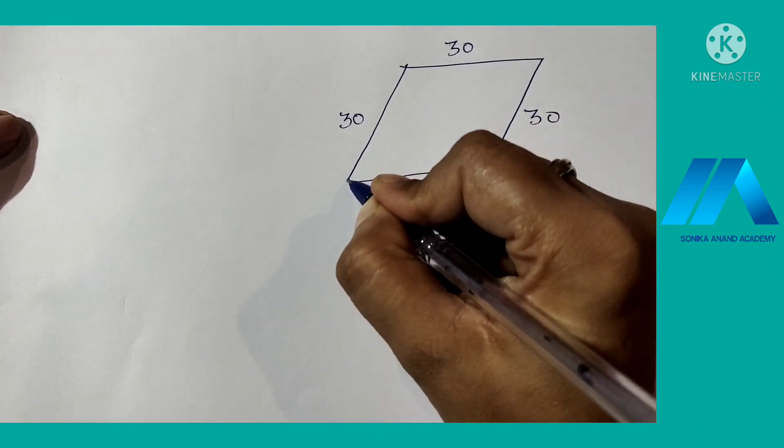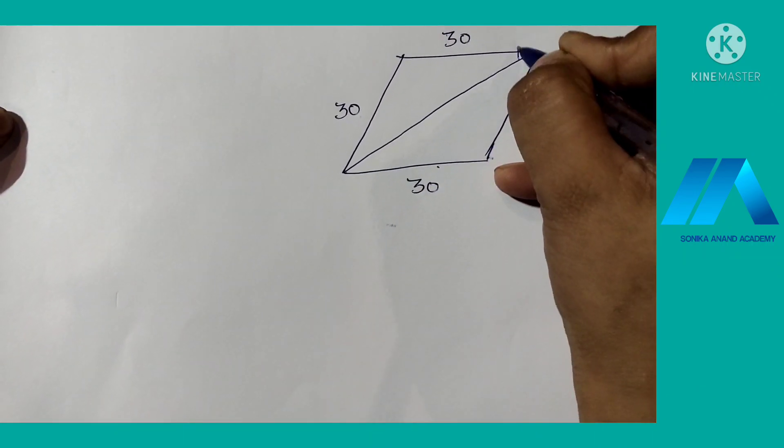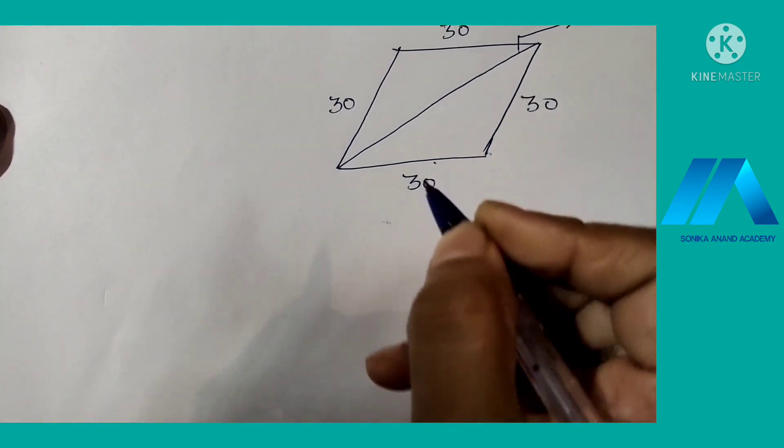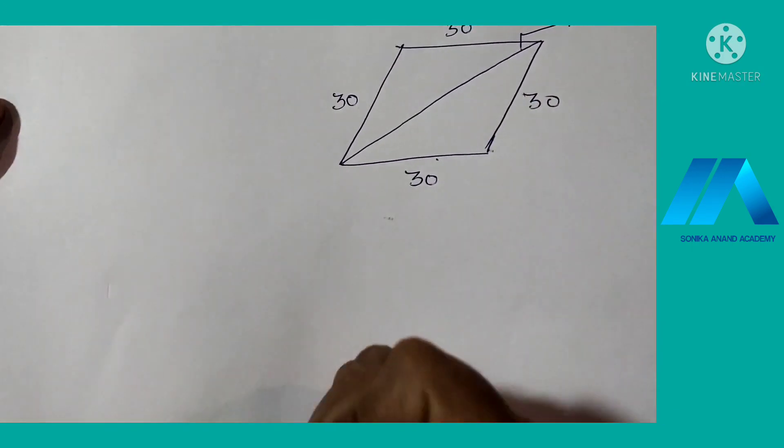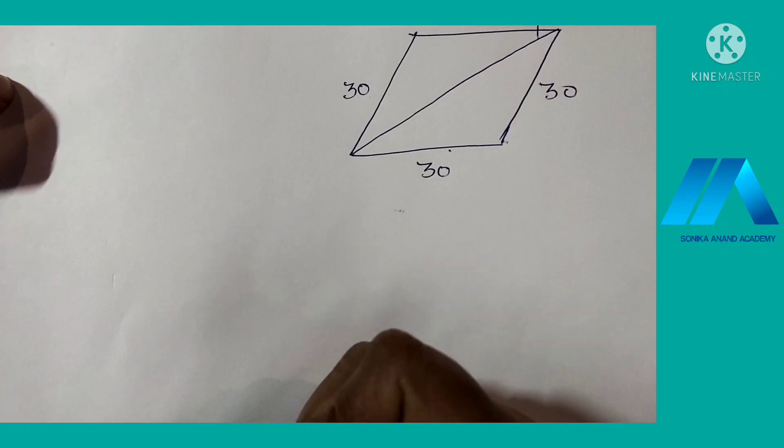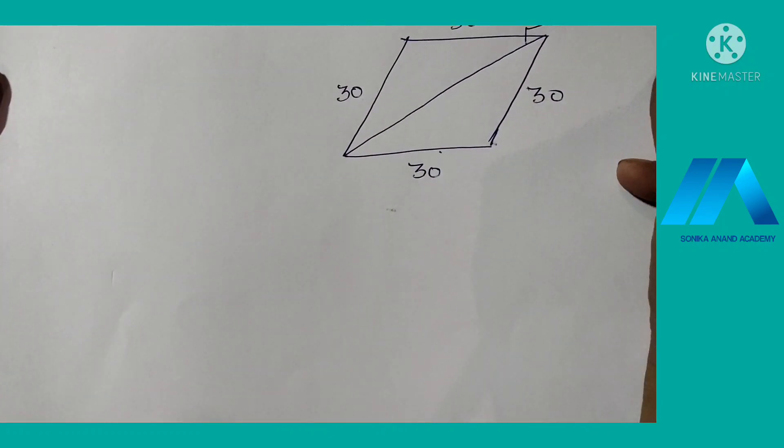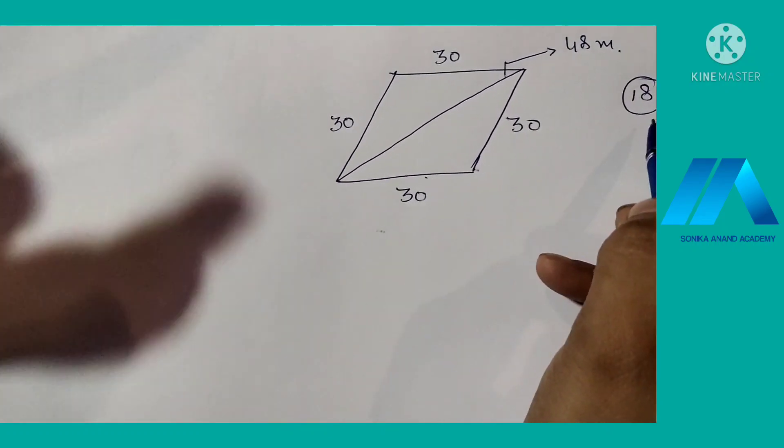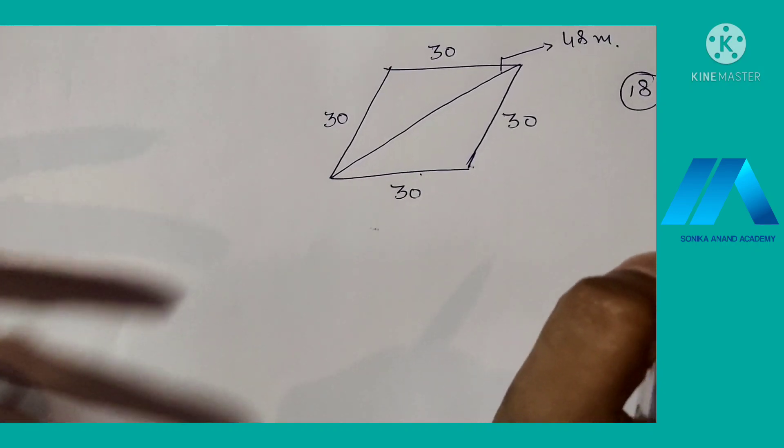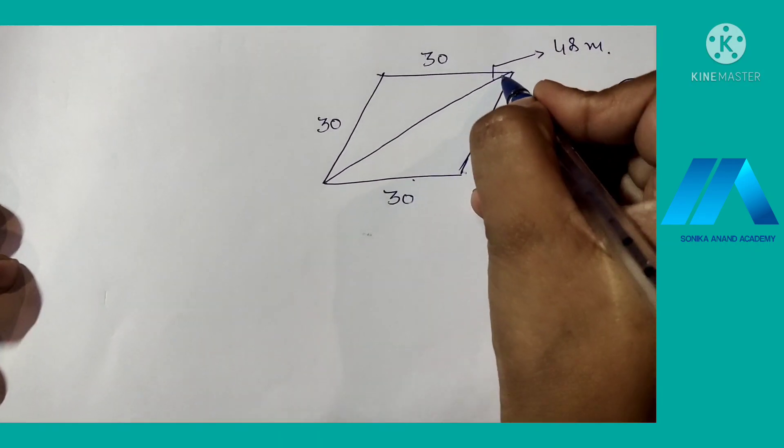The longer diagonal is 48 meters. If one diagonal is 48 meters, and the other diagonal we don't know. There are 18 cows that are going to graze. So how much area will every cow graze?